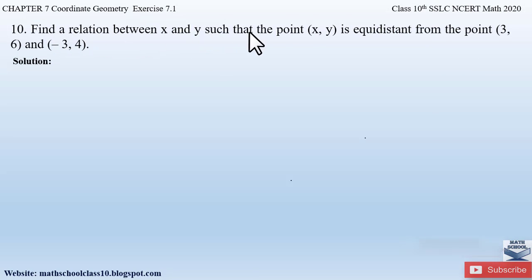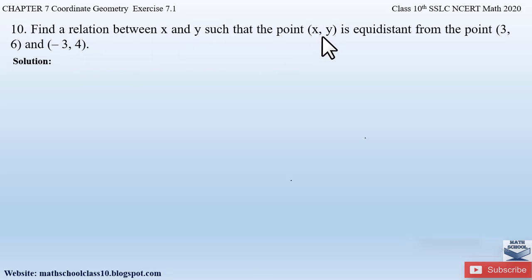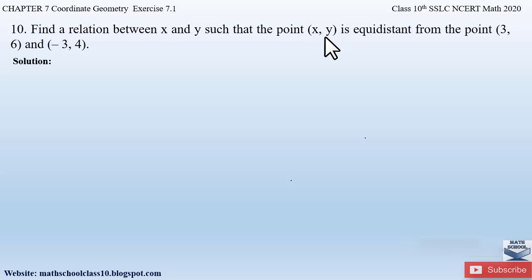Question number 10 from exercise 7.1, chapter 7 coordinate geometry says: find the relation between x and y such that the point (x, y) is equidistant from the point (3, 6) and (-3, 4). Here they have given us a point (x, y) which is equidistant from two other given points, and we have to find the relation between coordinates x and y. They are not asking for the value of x and y but instead a relationship — that is, an equation that will be formed.